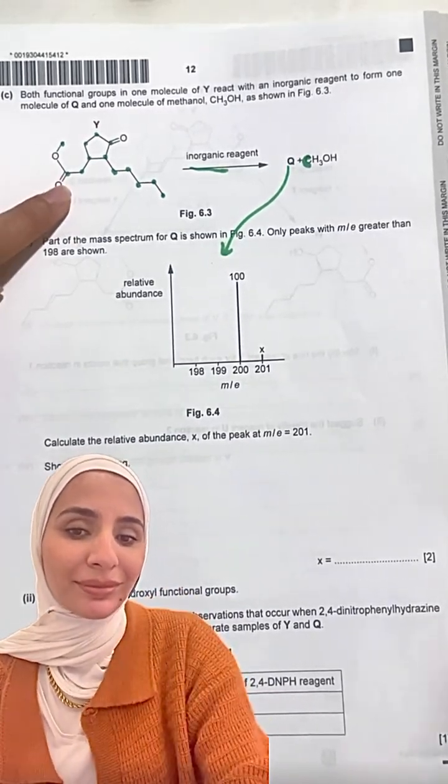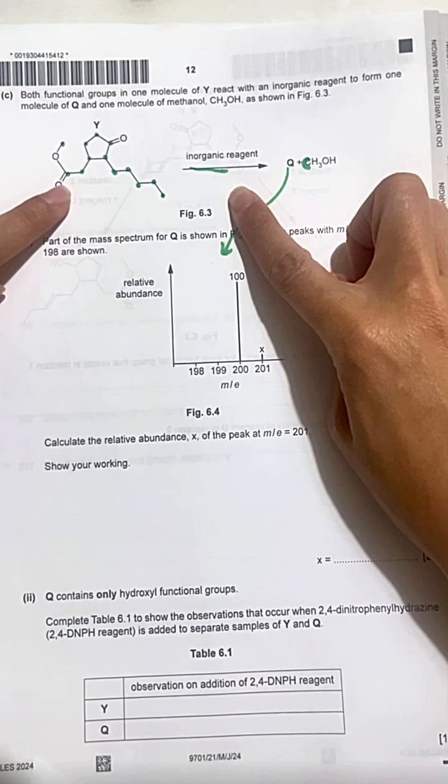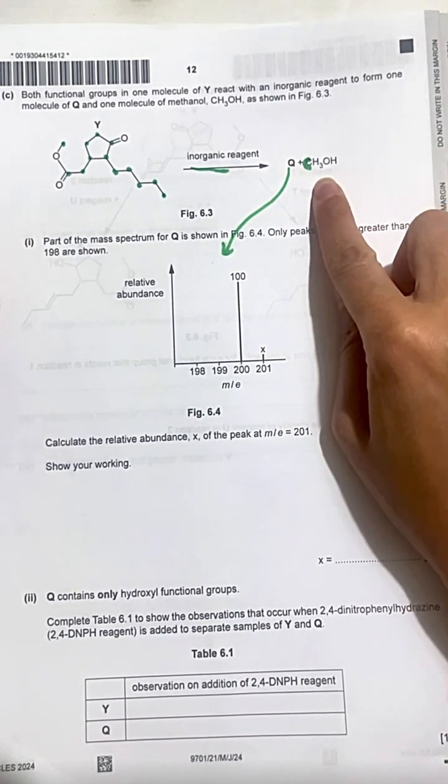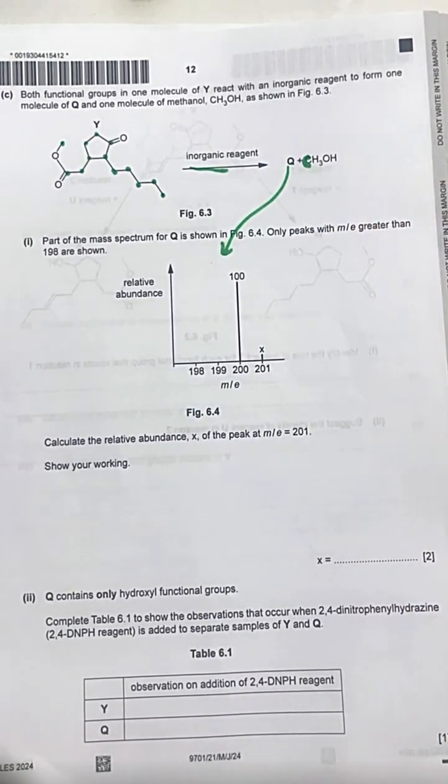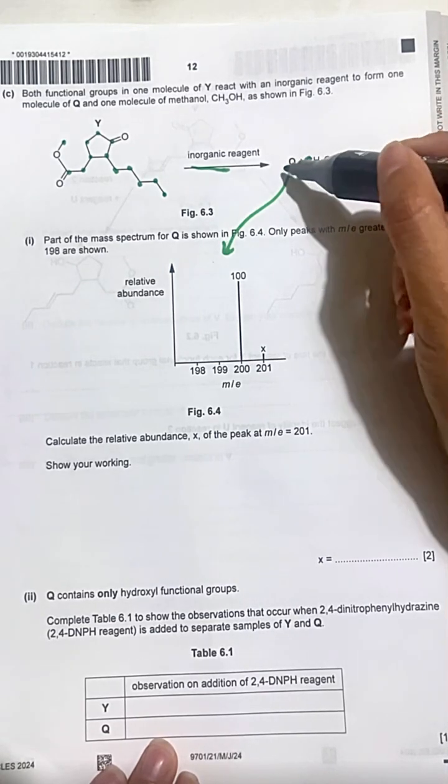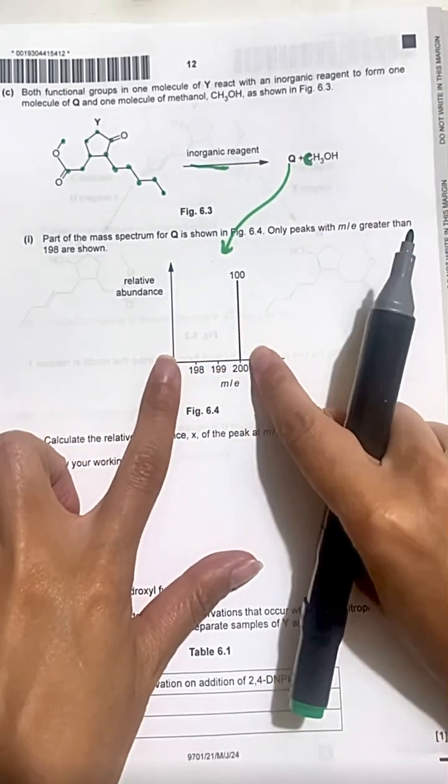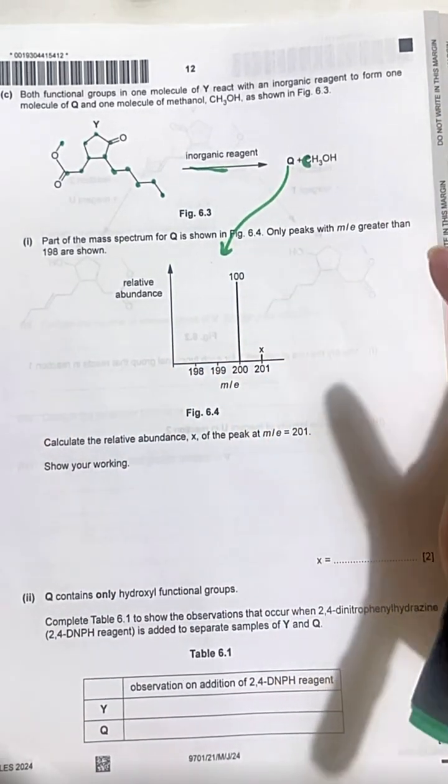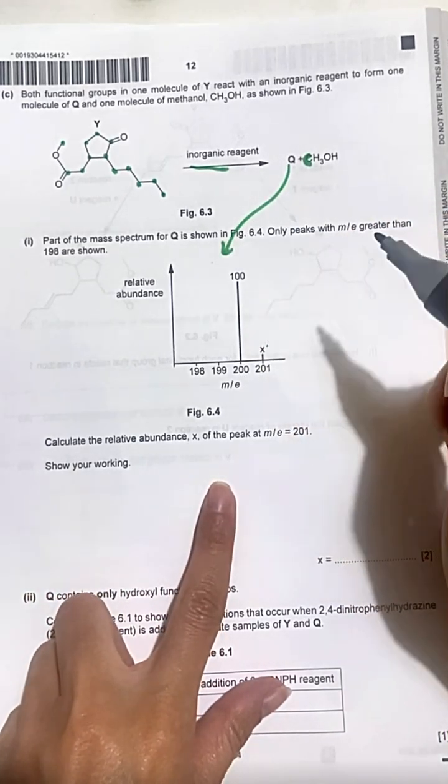This is why it reacts with inorganic reagent to produce Q and methanol. Q has this mass spectrum and the question is asking, calculate the relative abundance of X.